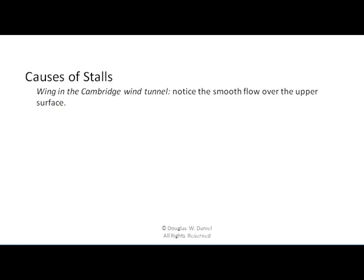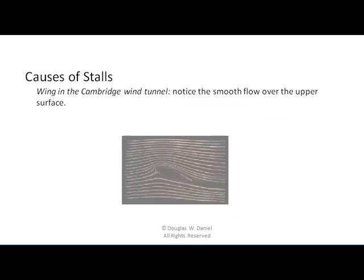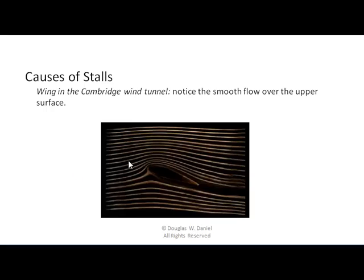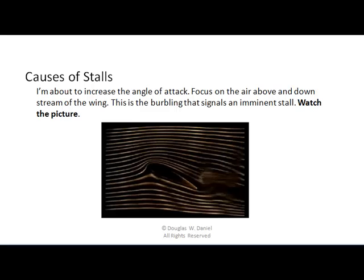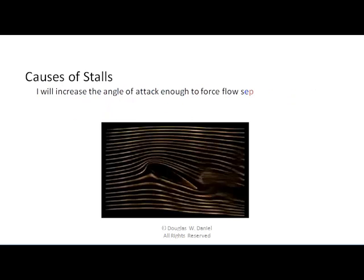Here's the wing in the Cambridge wind tunnel. Notice the smooth flow over the upper surface. Now I'm about to increase the angle of attack. Focus on the air above and downstream of the wing. This is the burbling that signals an imminent stall — watch the picture right in there. Okay, here's the burble. I'm going to increase the angle of attack enough to force flow separation. This is going to be a stall, so look right in this area here.